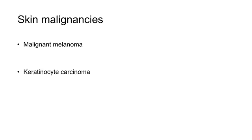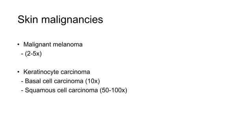The risk of malignant melanoma is 2 to 5 times increased. Keratinocyte carcinoma can be divided into two subtypes: basal cell carcinoma and squamous cell carcinoma. The risk of basal cell carcinoma is 10 times increased, and the risk of squamous cell carcinoma is 50 to 100 times increased. There is still some debate whether these malignancies are infection-related or non-infection-related. In the rest of this lecture, we will focus on cutaneous squamous cell carcinomas, since these form the largest part of the malignancies developed after transplantation.